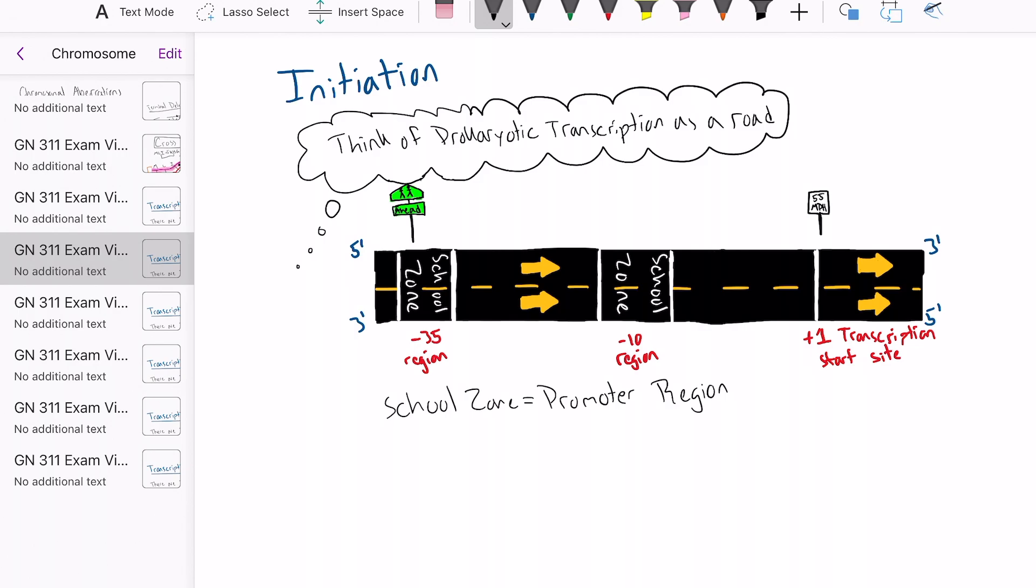The first and second school zones represent the negative 35 and the negative 10 promoter regions respectively, and the 55 mile per hour zone represents the plus one transcription start site. The top road will be the coding lane, and the bottom road will be the template lane.